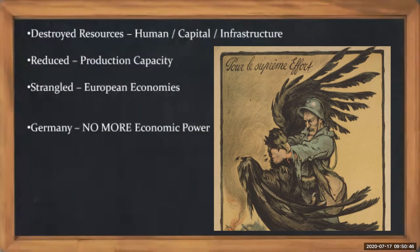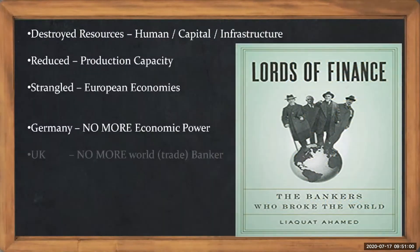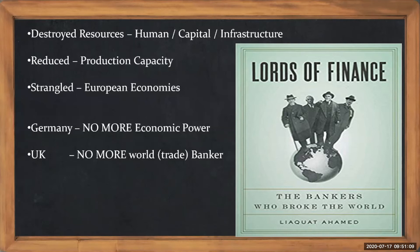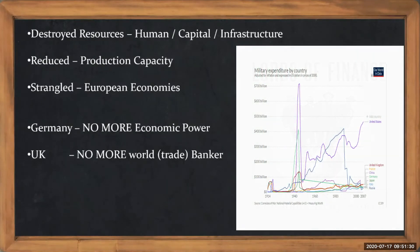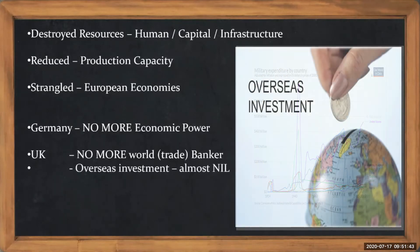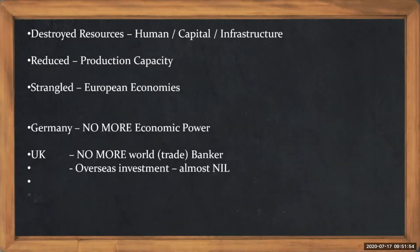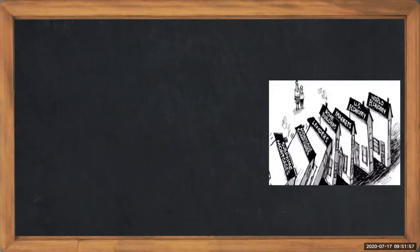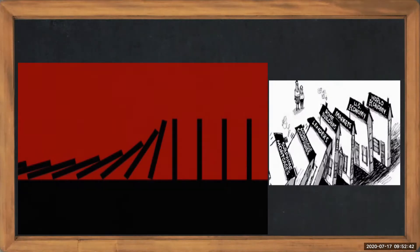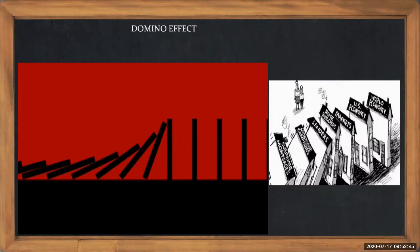Germany was actually finished economically and financially after the first world war. In the past, England was the banker to world trade. After the first world war, it was no more a banker to the world. It used to finance world trade because it itself was a trade superpower, but after the first world war it came down and overseas investment became almost nil. USA profited for some time, but this did not really last very long. The best way to understand this is to look at something called the domino effect.